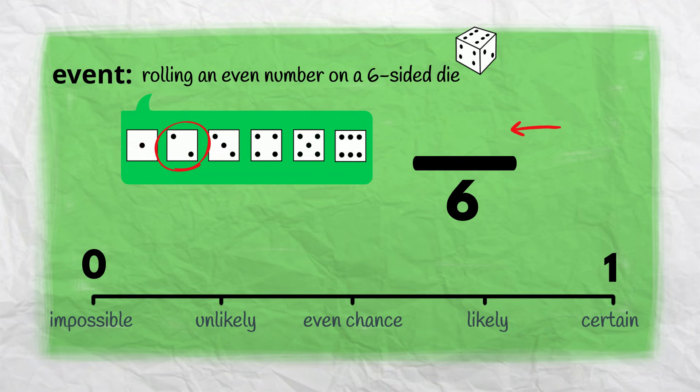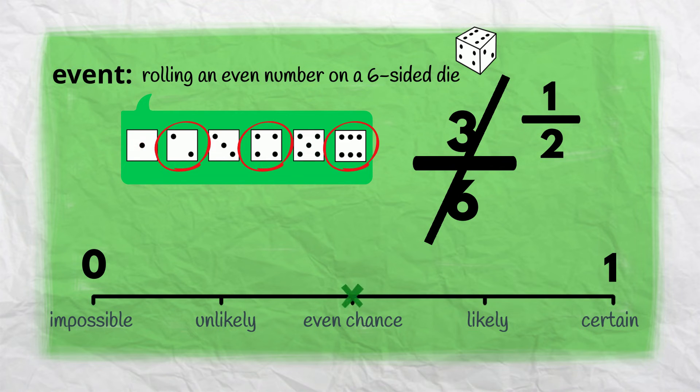Now for the numerator: how many ways could our event happen? If we roll a 2, our event has happened, the same as if we roll a 4 or if we roll a 6. There are three ways our event could happen. Our numerator is 3. The chance of rolling an even number is 3 in 6.